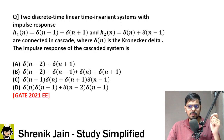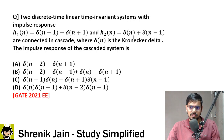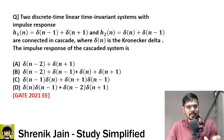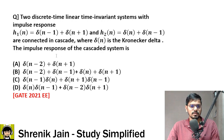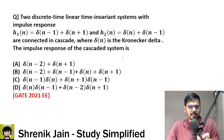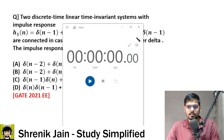Two discrete-time linear time-invariant systems with impulse response h1(n) = δ(n−1) + δ(n+1) and h2(n) = δ(n) + δ(n−1) are connected in cascade, where δ(n) is the Kronecker delta. The question asks for the impulse response of the cascaded system — options A, B, C, or D. Your time starts now.